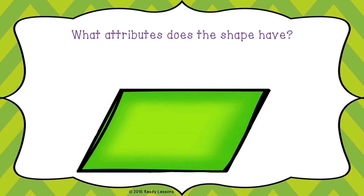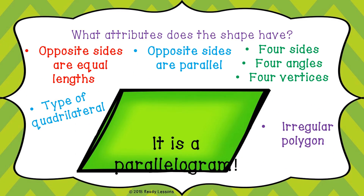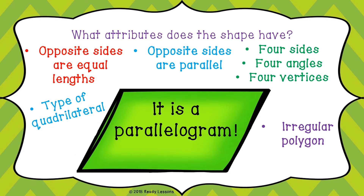How about this? What's the name of the shape? It is a parallelogram. A parallelogram has opposite sides that are equal in length. Opposite sides are parallel. It has four sides, four angles, and four vertices. A parallelogram is an example of a regular polygon.